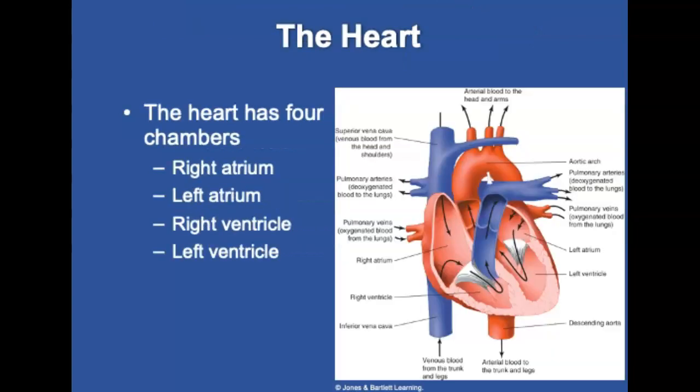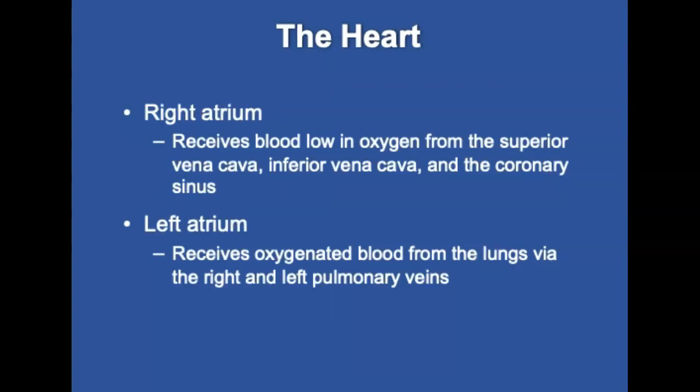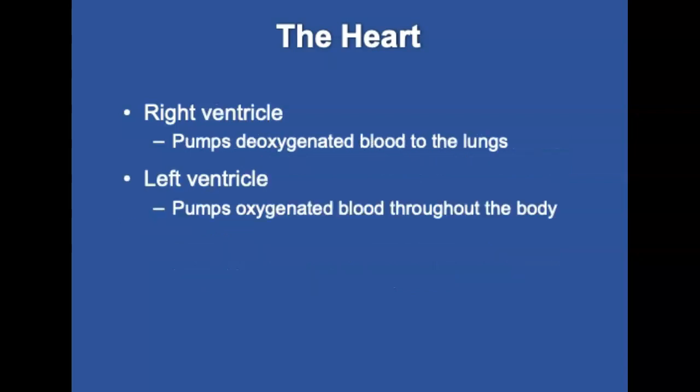The heart has four chambers: the right atrium, left atrium, right ventricle, and left ventricle. The right atrium is an upper chamber that receives blood low in oxygen from the superior vena cava, inferior vena cava, and the coronary sinus. The left atrium is also an upper chamber; it receives fresh oxygenated blood from the lungs by way of the right and left pulmonary veins. The right ventricle is a lower chamber that pumps deoxygenated blood to the lungs. The left ventricle pumps oxygenated blood throughout the body. When the left ventricle contracts, it produces an impulse palpable at the apex of the heart, also called the point of maximal impulse, or PMI.